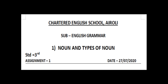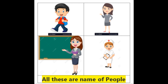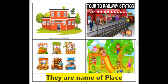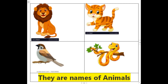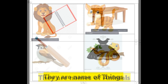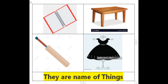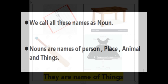Hi students, this is Prachi miss and today we start the subject English Grammar and our first topic is noun and types of noun. Noun matlab naam. So first look at some pictures. You can see here: boy, woman, teacher, nurse — all these are names of people. Next is school, station, market, garden — they are names of places. Then lion, cat, sparrow, snake — they are names of animals. Next is notebook, table, bat, dress — they are names of things.